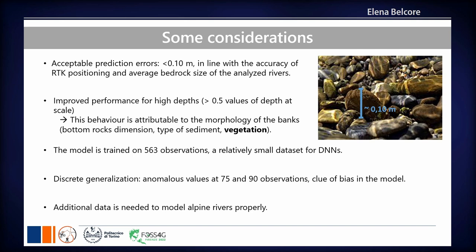The network performance improves for greater depths, but we believe this is due to the dimension of the rocks at the bottom, the type of sediment, and the presence of vegetation. We believe performances can be improved by adding more observations, because the main gap is that we only have around 500 observations for a neural network — even for a regressor, this is still not enough. But this is only the beginning.